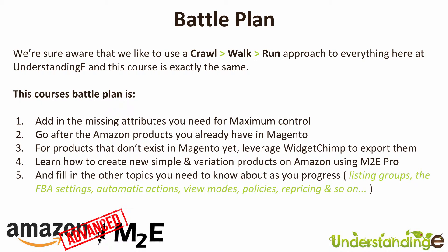Part five of the battle plan covers everything else. The battle plan takes you from steps one to four — sorting out inventory discrepancies where you have some products on Amazon, some on eBay, and some in Magento. Part five then covers listing groups, FBA settings, automatic actions, view modes, policies, repricing, and so on. That allows us the flexibility to adapt based on the feedback we get during this course.